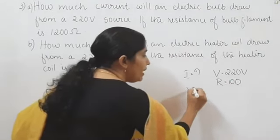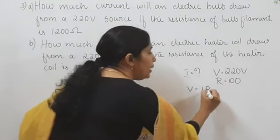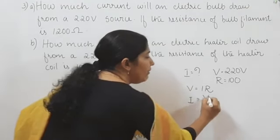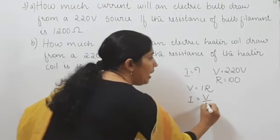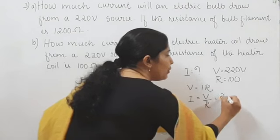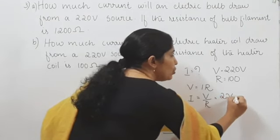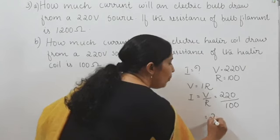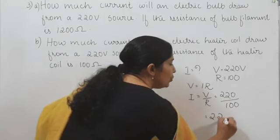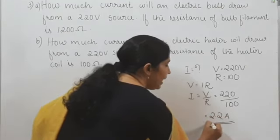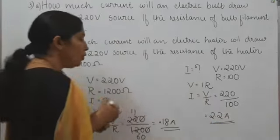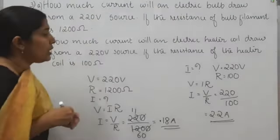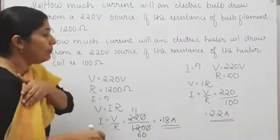From Ohm's law, V is equal to I into R. Therefore, I is equal to V divided by R, which is 220 divided by 100, equal to 2.2 ampere. The current drawn from the same source is 2.2 ampere.